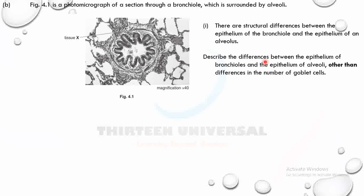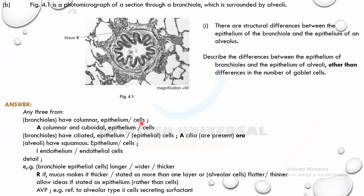Bronchiole epithelium has cilia; alveolar epithelium does not have cilia, because there are no goblet cells and therefore no mucus to move. Bronchioles have columnar and cuboidal cells — columnar are tall cells, cuboidal are cube-shaped. The bronchiole has ciliated epithelium; the alveolus has squamous epithelium that is thinner and flatter. Three marks.